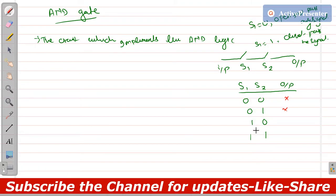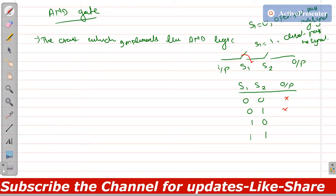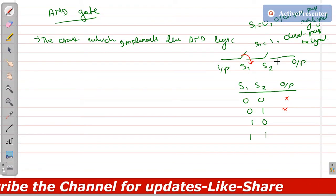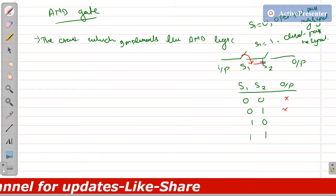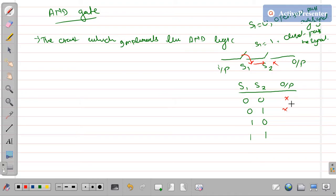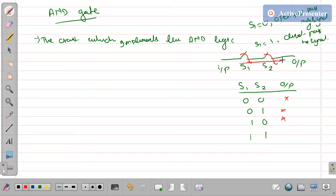Similarly, if switch S1 is closed and switch S2 is open, the signal will pass through S1 but will not pass through S2, so there will be no output. In the last case, where both switches are closed, the signal can reach the output and there will be some output.